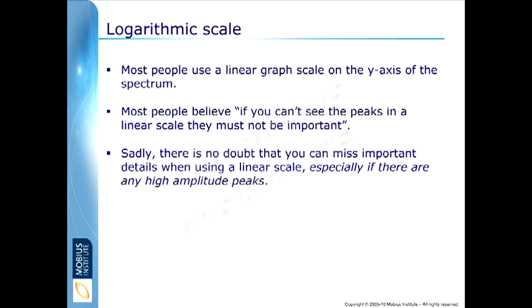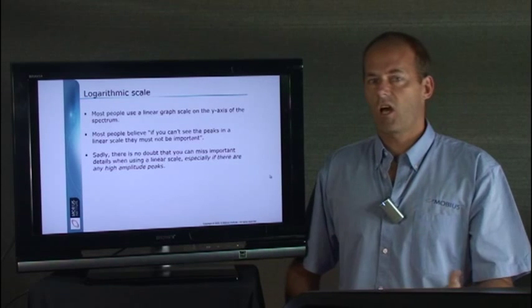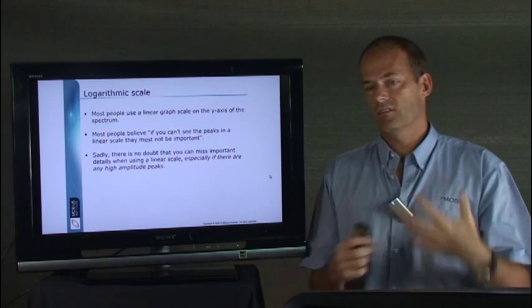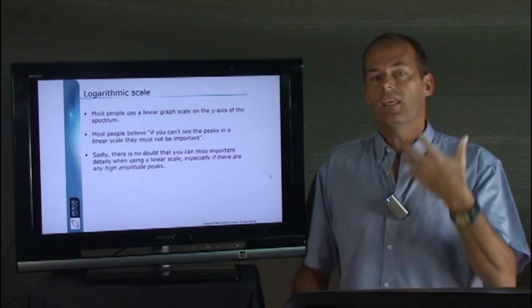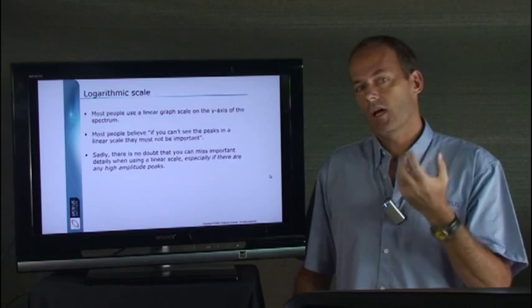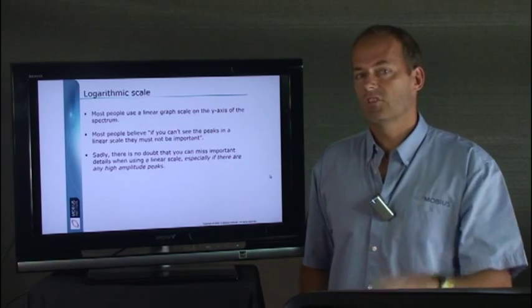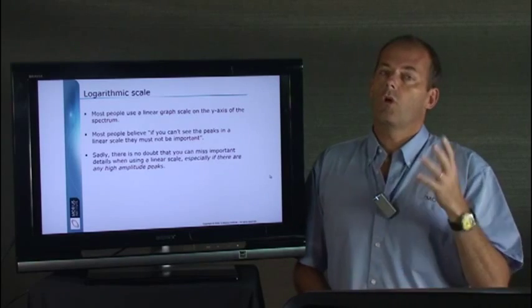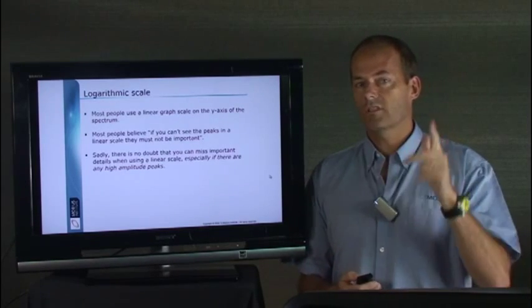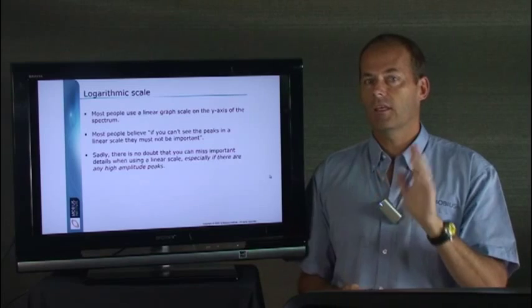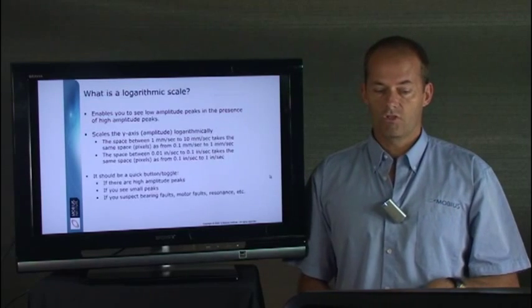Unfortunately, that is not the case. There are lots and lots of situations where the spectrum actually contains really useful information about your machine, the presence of sidebands and harmonics and resonances and all sorts of things. It is there. It's just you can't see it because of the linear scale. The linear scale is easier, but you hopefully will get into the habit of just toggling sometimes over to log, toggle back again, and you might be surprised what you see.